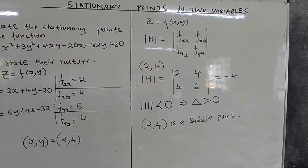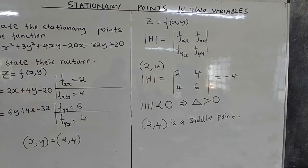So the point (2, 4) is a saddle point, and that is how to handle a problem of this kind.